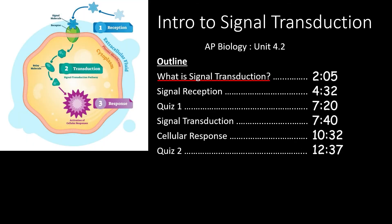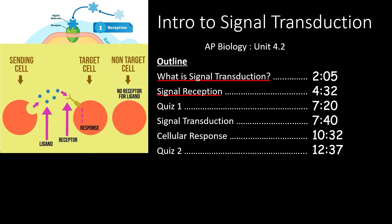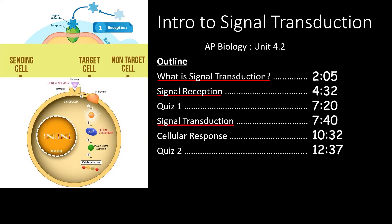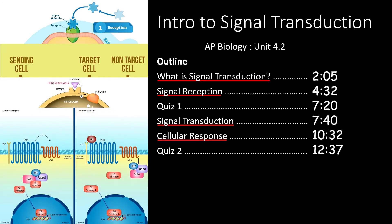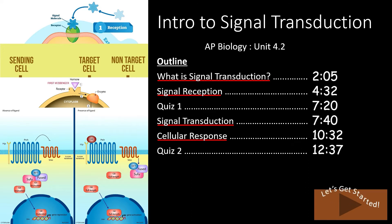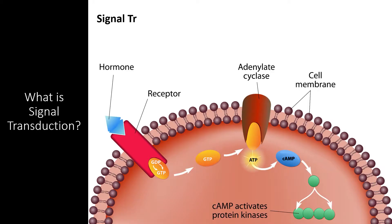We'll start by answering the question: what is signal transduction? Then we'll dive into specifics and vocabulary related to each part of the process. First we'll cover signal reception and the many different ways a cell can receive a signal. After the first quiz we'll look at the complex reactions and secondary messengers that carry out the process of signal transduction. Finally we'll see how these first two steps ultimately lead to a cellular response that helps the cell survive and contribute towards a coordinated response in a larger organism. If you only need to review one of these parts, feel free to skip forward to the times outlined here.